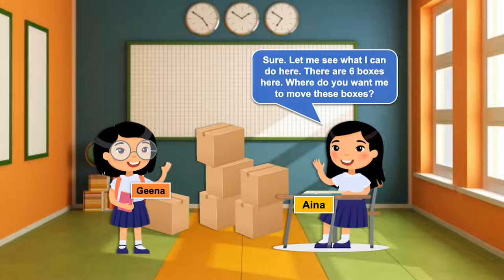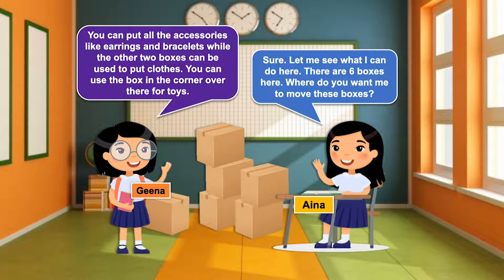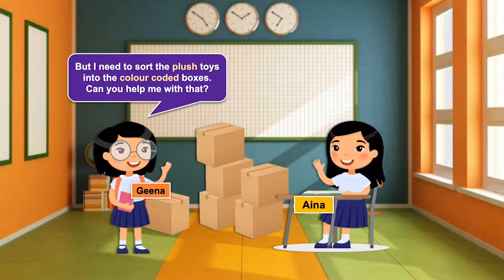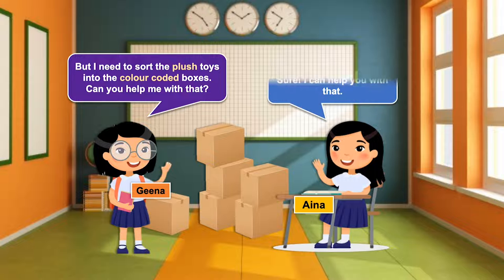Let me see what I can do here. There are six boxes here. Where do you want me to move these boxes? You can put all the accessories like earrings and bracelets in one box, while the other two boxes can be used for clothes. You can use the box in the corner for toys, but I need to sort the plush toys into color-coded boxes. Can you help me with that?